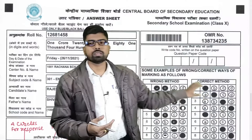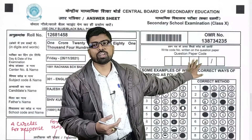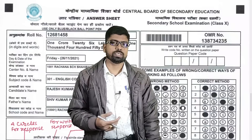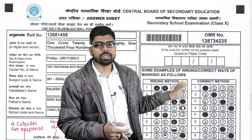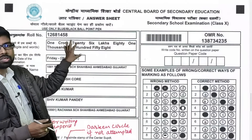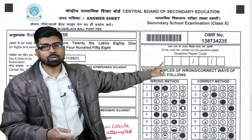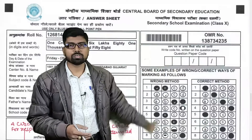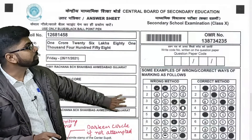In the question paper, one alphanumerical code number will be given, and you have to write this code number in the box provided on the OMR sheet. Do not write or fill anything else in the pre-printed section — only write the question paper code number in that box.